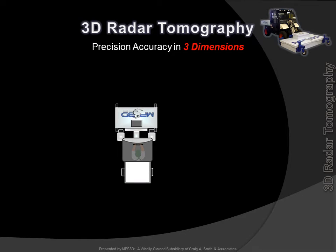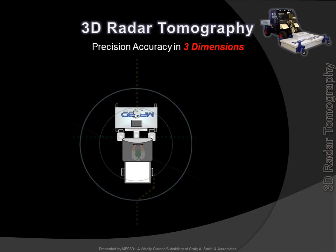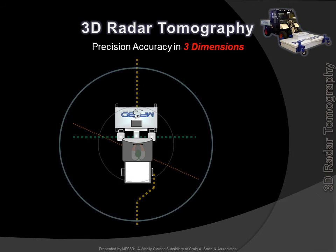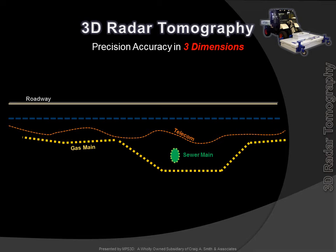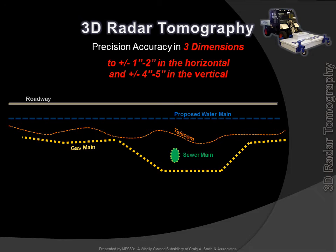Precision accuracy in three dimensions. Known, unknown, abandoned or forgotten — radar tomography locates them all. Let's again visit our example project where we see all the existing facilities in profile and we are able to determine where the new proposed facility can be constructed with the least chance of conflict. Stated and certified accuracies of plus or minus 1-inch to 2-inch horizontally and plus or minus 4-inch to 5-inch vertically, without the need for excavation.